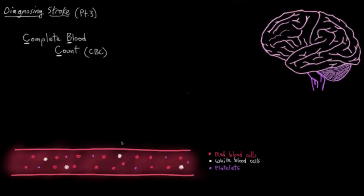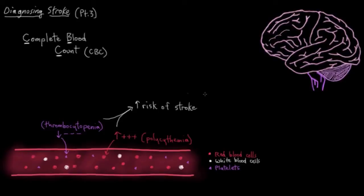For example, say you had too many red blood cells in your blood, that's a condition called polycythemia. Or say you had too few platelets, which is thrombocytopenia. You'd be at a higher risk of stroke because these conditions alter the rate at which your blood clots. If your blood clotted too much for whatever reason, you'd be at higher risk for getting a clot stuck in a cerebral blood vessel and having an ischemic stroke.